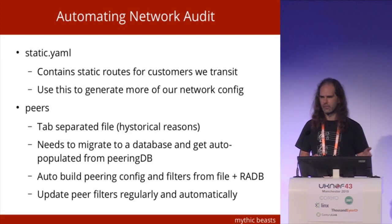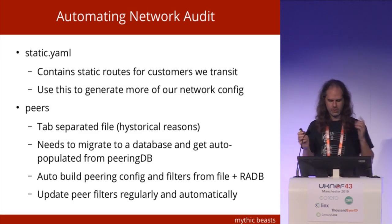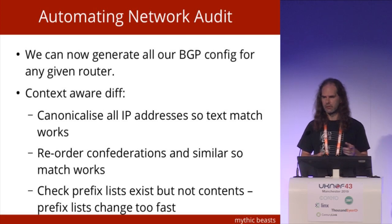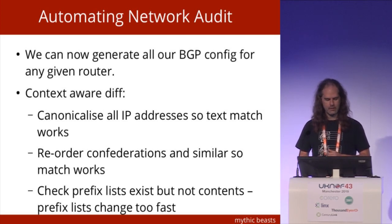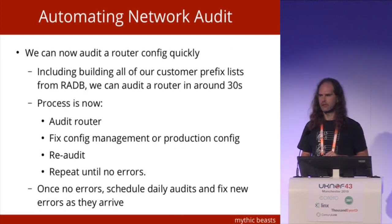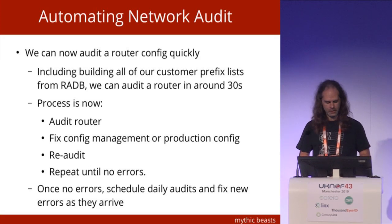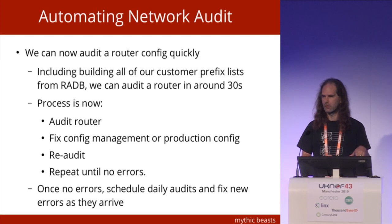We can generate all of our config, and we have to write a context-aware diff that can go and look at a router and compare it to what our config management system spat out. It will canonicalize IP addresses, it will reorder things, and it will check that our peers have a prefix list but won't specifically check the contents, because we don't expect that to be the same. The result is we can now do an audit reasonably quickly. You can just say audit that router, and 30 seconds later it comes back and says I found this line — timers. Why is it there? Someone says, oh, that was because we had a problem on the Internet Exchange. Right, now we can patch our config management to make that line appear later, and keep going until your config diff says your test tool, your config management DB, and your production routers are in sync.